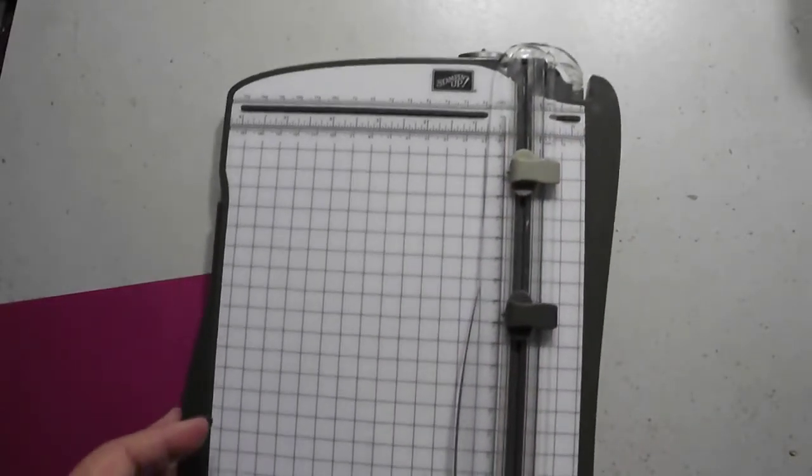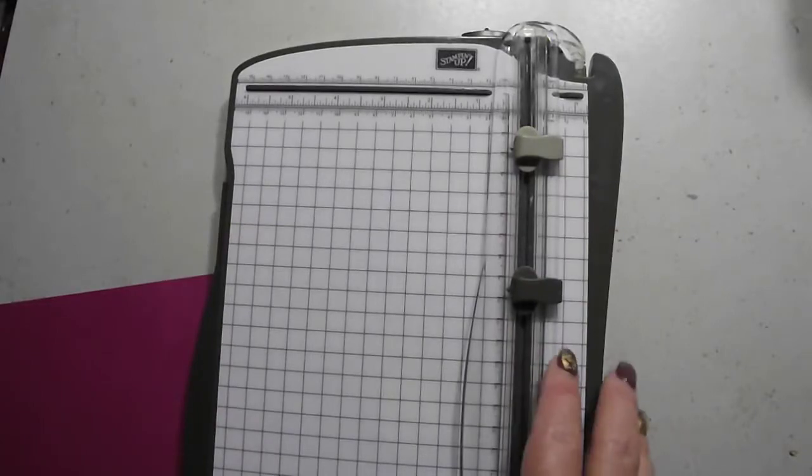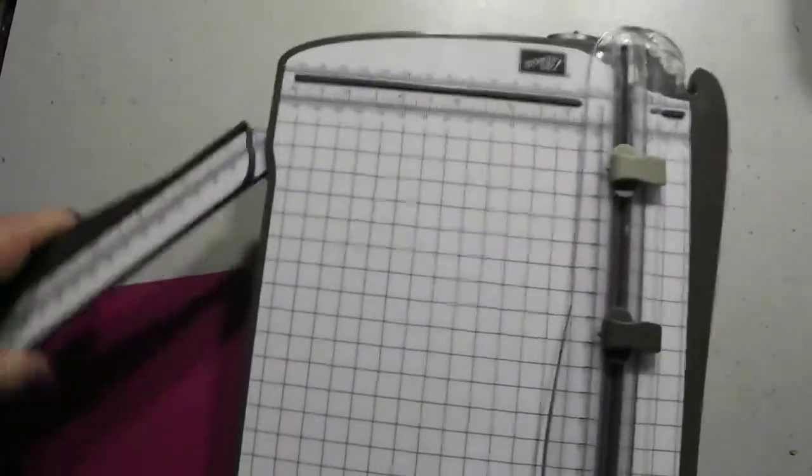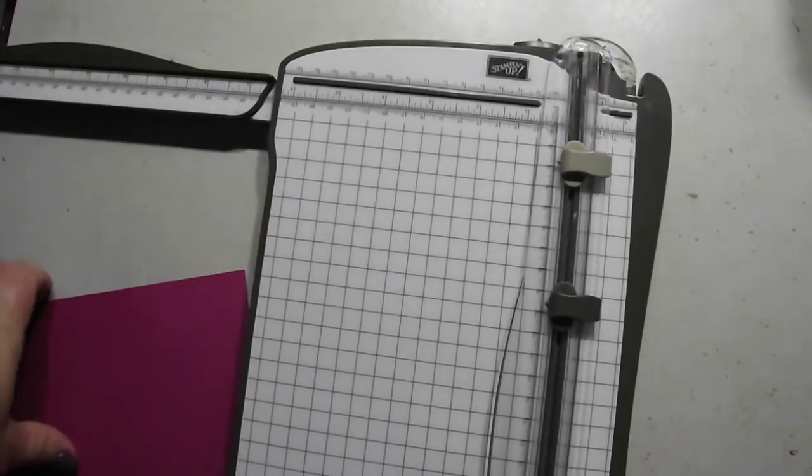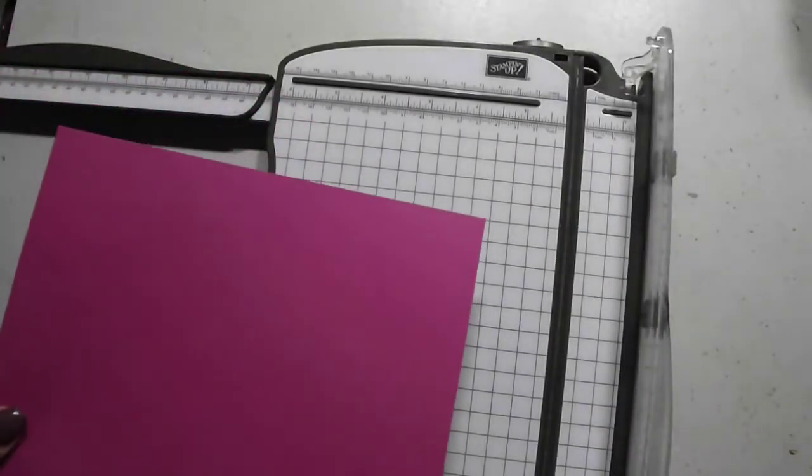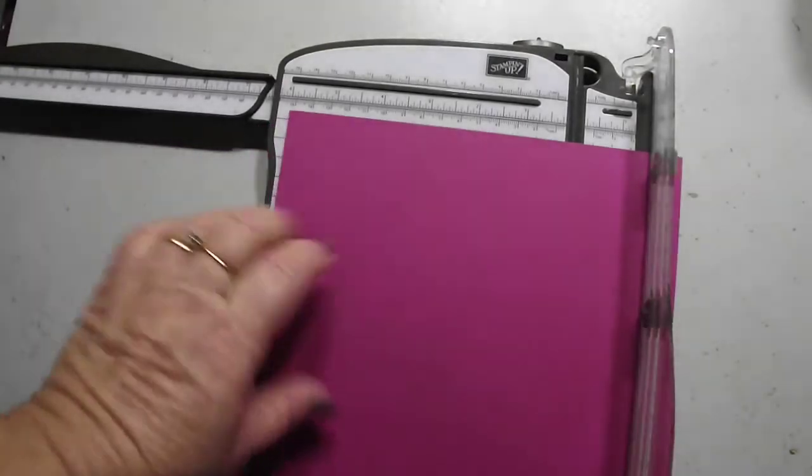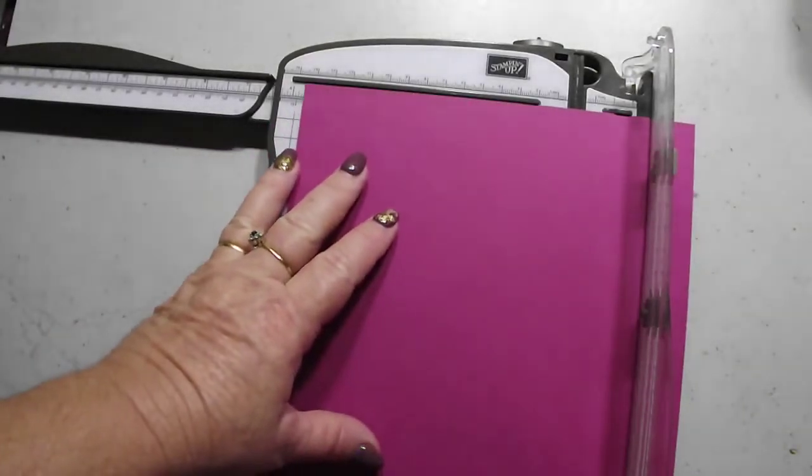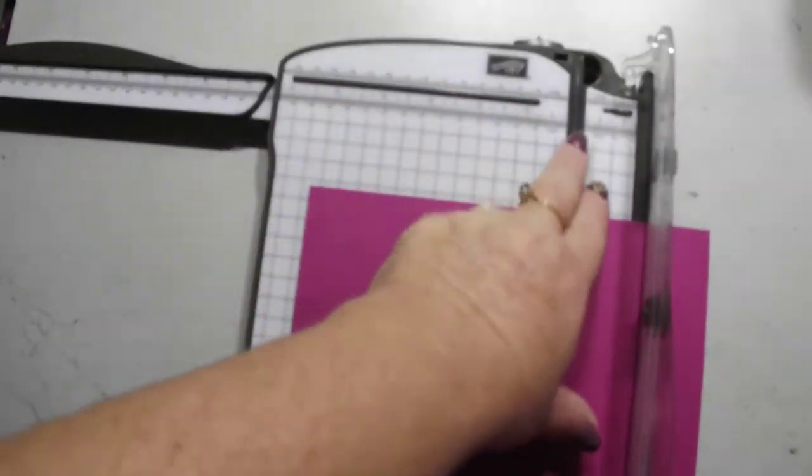We can cut and score our cardstock all in one go with our trimmer. So what we do is, how I cut my basic cardstock is, I cut my cardstock at 5 and 3 quarter inches.